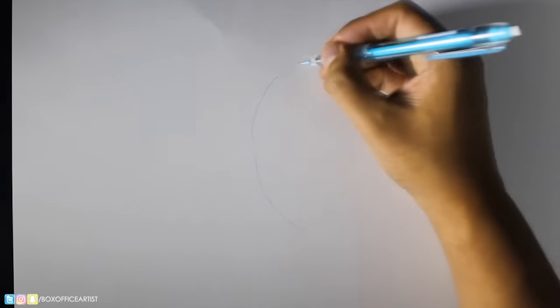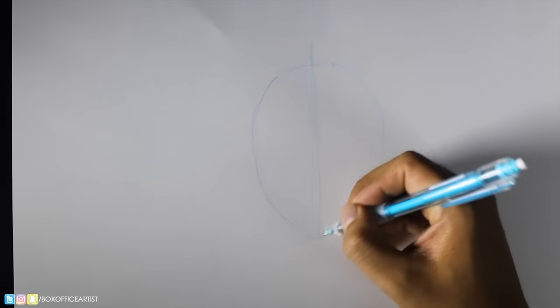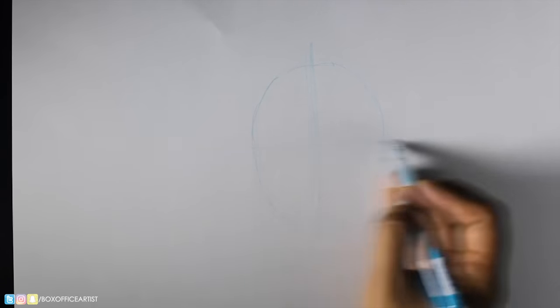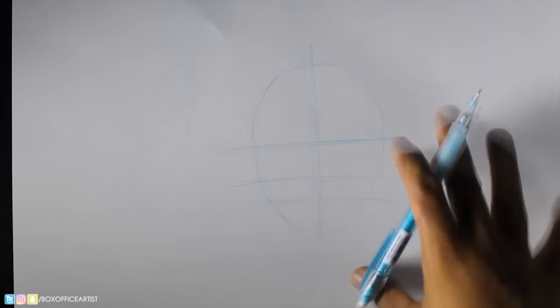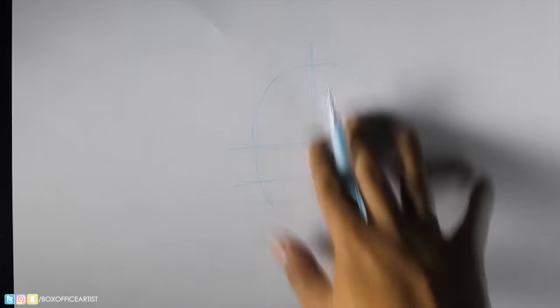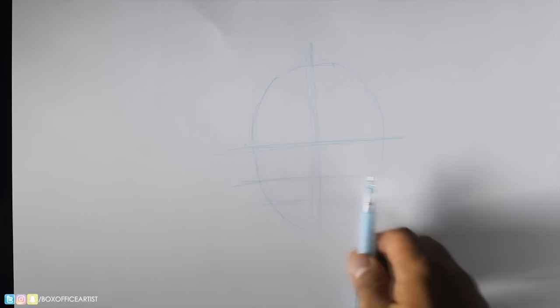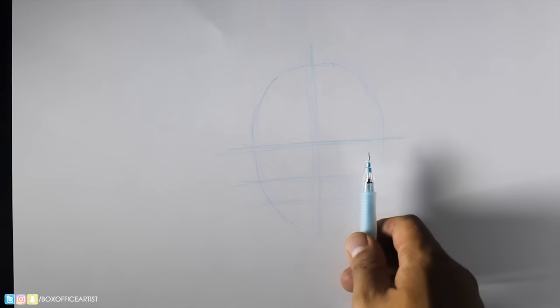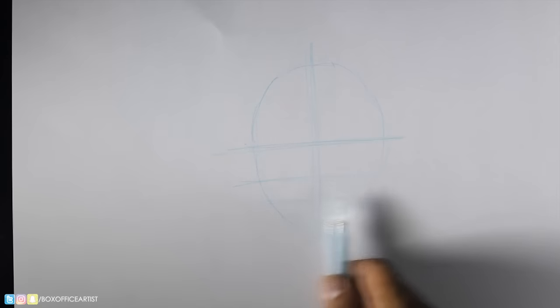Whenever I see a lot of people draw a head, they start with an oval, then a construction line down the middle splitting the head into halves, a line in the middle, a line in between, and then the mouth is split in half again. That's not wrong - that is completely right in terms of proportions of the head. However, this is not how I think, because whenever I see someone draw like this their drawing still feels flat to me.